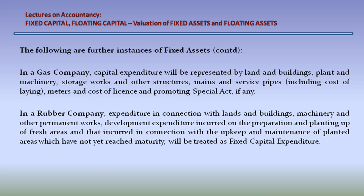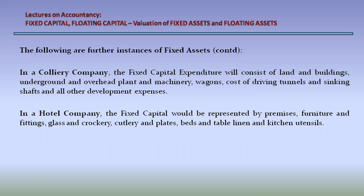In a gas company, capital expenditure will be represented by land and buildings, plant and machinery, storage works and other structures, mains and service pipes including cost of laying, meters and cost of license, and promoting special activity. In a rubber company, expenditure in connection with land and buildings, machinery and other permanent works, development expenditure incurred on the preparation and planting of fresh areas, and that incurred in connection with the upkeep and maintenance of planted areas which have not yet reached maturity, will be treated as fixed capital expenditure. In a colliery company, the fixed capital expenditure will consist of land and buildings, underground and overhead plant and machinery, wagons, cost of driving tunnels and sinking shafts, and all other development expenses.